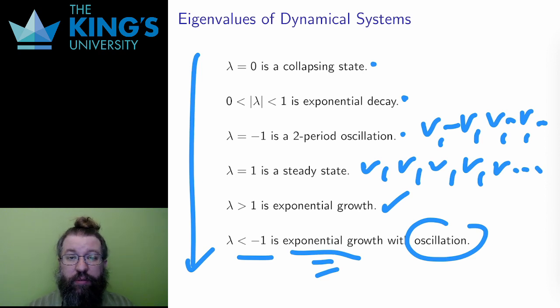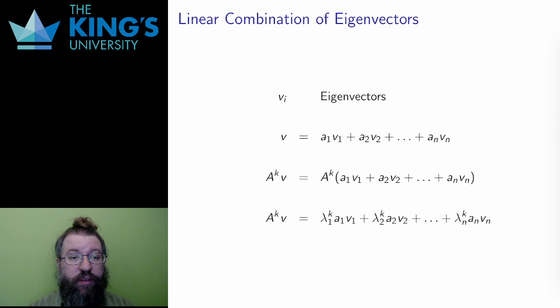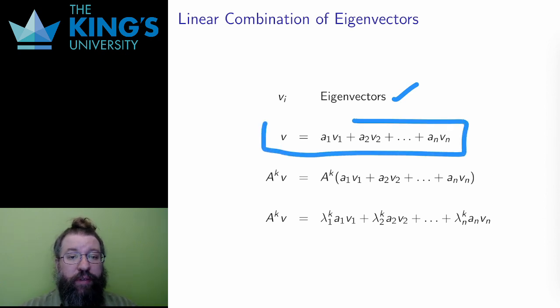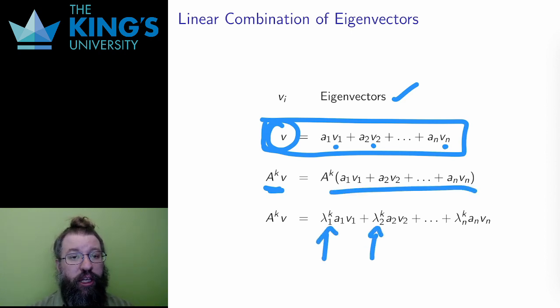This is all well for eigenvectors, but what if the starting state isn't an eigenvector? Well, the eigenvectors still end up controlling the long-term behavior, but it can get a bit more complicated. Ideally, there is a full set of eigenvectors, and I can write any starting state as a linear combination of the eigenvectors, where each eigenvector has its matching eigenvalue. Then, the long-term behavior of the system with the starting state is indeed given by the eigenvalues, but just in linear combination with each other.